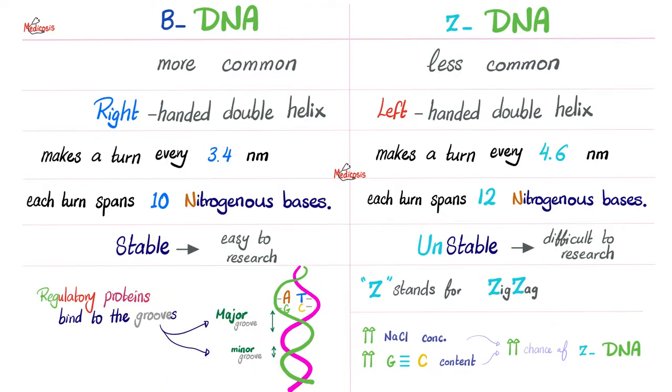Let's compare between B-DNA and Z-DNA. Z stands for zigzag. B-DNA is way more common than Z-DNA. B-DNA is the right-handed double helix, but Z is left. B-DNA makes a turn every 3.4 nanometers. How many bases is that distance? About 10 nitrogenous bases. B-DNA is stable and therefore easy to research. Most of our knowledge on DNA is about B-DNA. Look at that. That's a turn and then another turn, etc. Making major grooves and minor grooves in between.